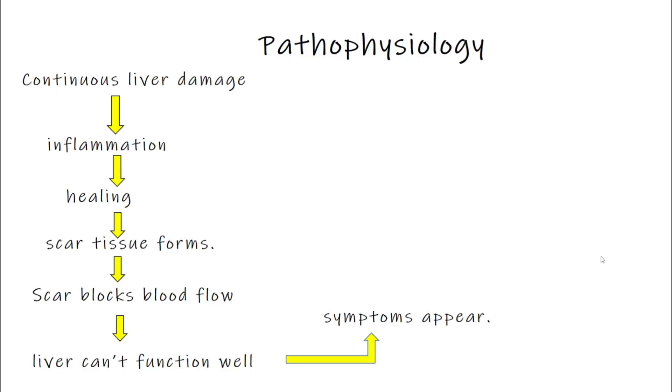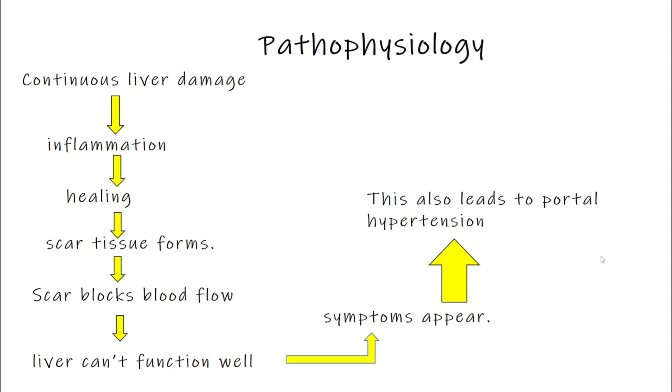Because of the blocked blood flow, the liver can't do its job properly — that is when symptoms start to show. Also, the blocked blood flow increases pressure in the liver's blood vessels. This is called portal hypertension, and it can lead to serious problems like swelling and bleeding.